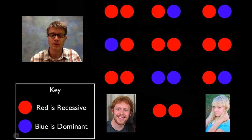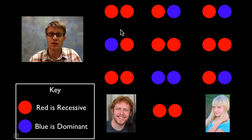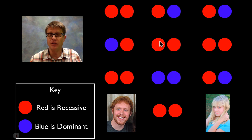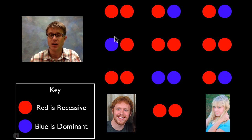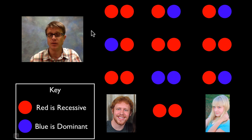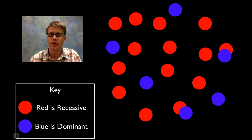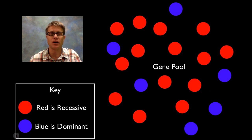Let's look at a population. Let's say we have a really small population — this population just has 10 individuals. Five of them have red hair because they have two genes for red hair, but the other ones are not redheads. So we'll say half of the people have red hair and half don't. If we were to take all those genes and throw them in a pile, that would be our gene pool.